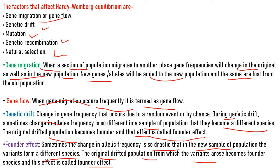Gene recombinations occur due to crossing over between segments of gametes, resulting in formation of new alleles and new genes. Recombination, by adding new alleles, genes, and combinations of genes to the gene pool, functions as an agent of evolution — through crossing over, separation of chromosomes, or random union of gametes.